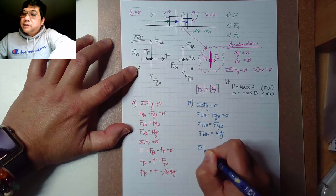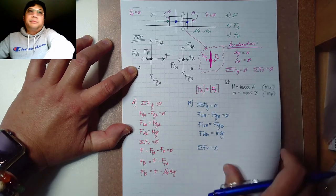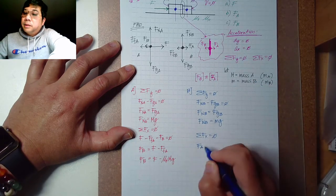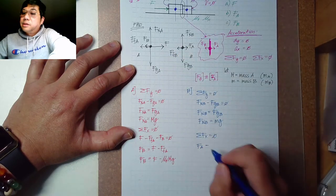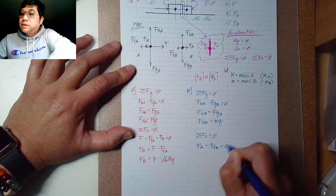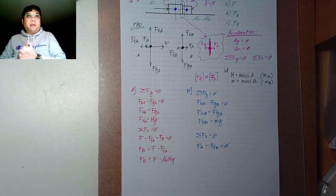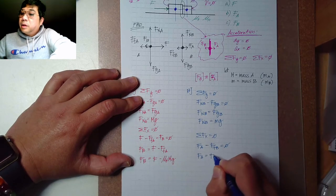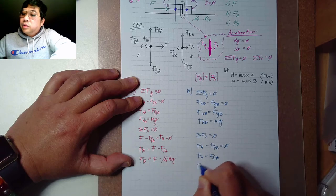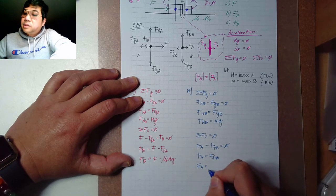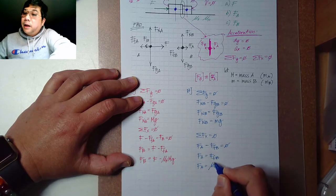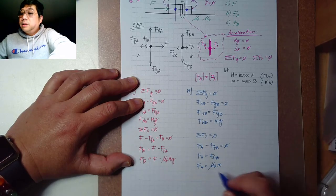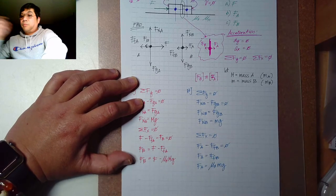For the summation of forces along the X axis of block B, it equals zero. Anything going to the right is F-of-A, minus the friction force of B, equals zero. So F-of-A equals the coefficient of friction multiplied by the mass m and g: F-of-A = mu-s times m times g.